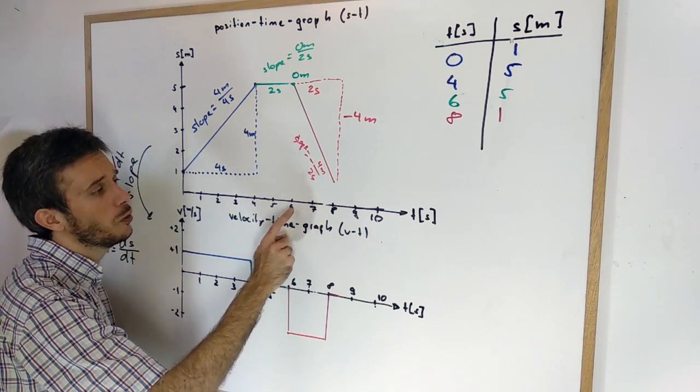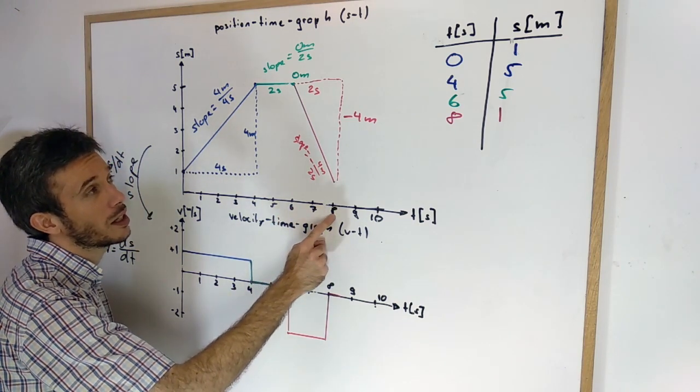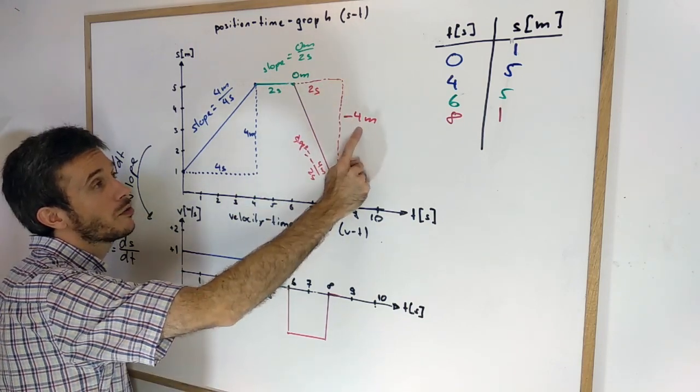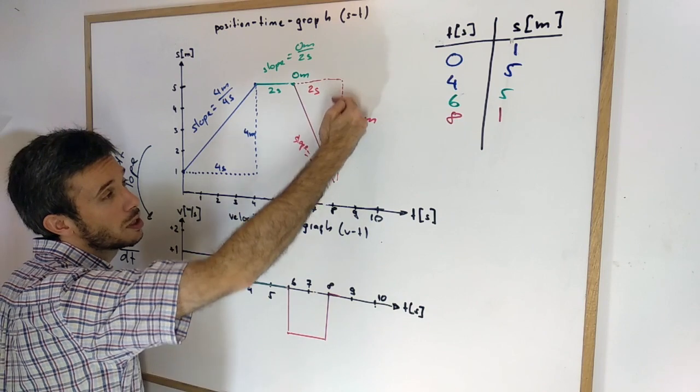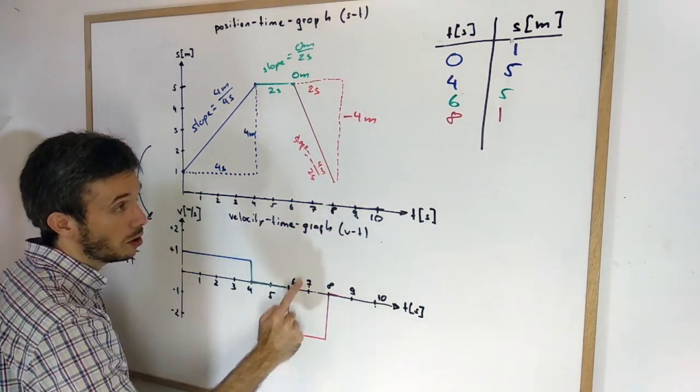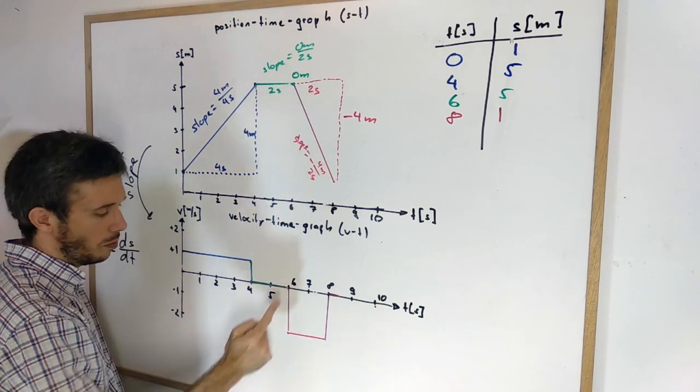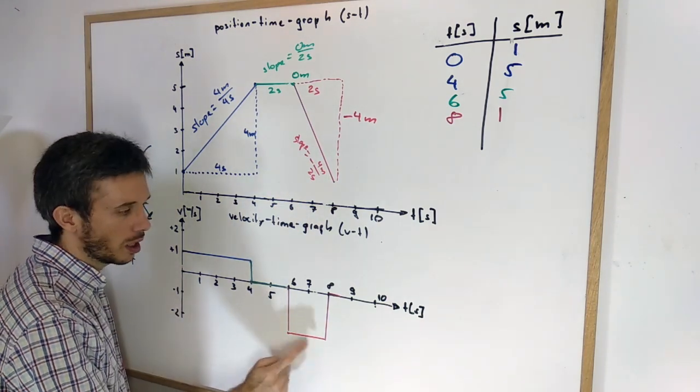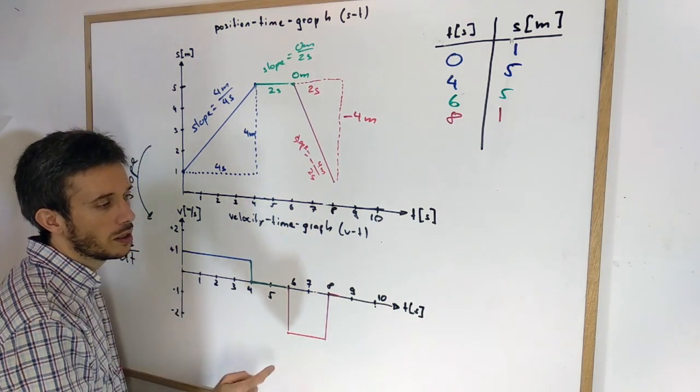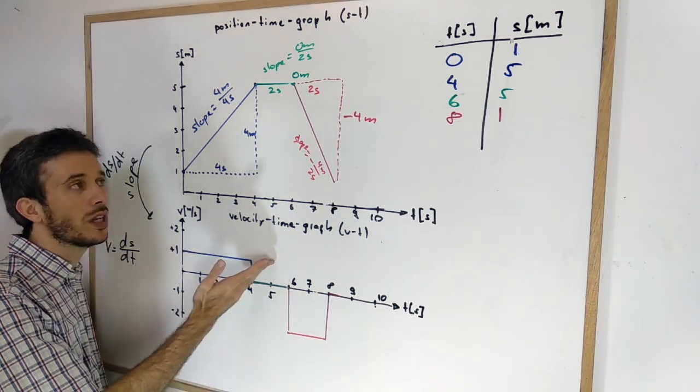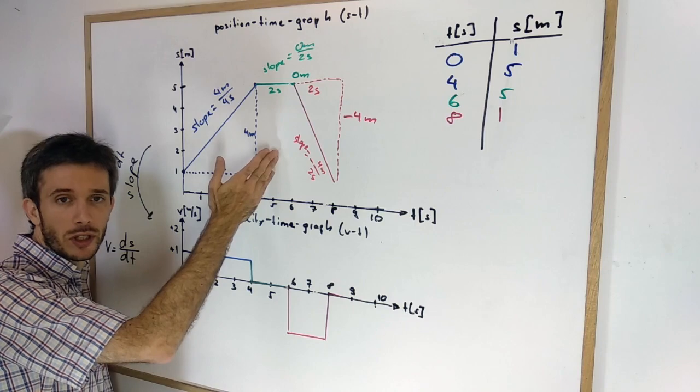In the last part of the movement, from 6 to 8 seconds, I had a rise of minus 4 meters. I was walking backwards 4 meters. So minus 4 over 2 gives me minus 2 meters per second between 6 and 8 seconds. And that's how I find the velocity time graph based on a position time graph.